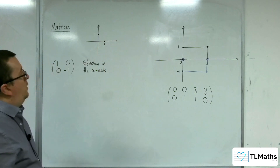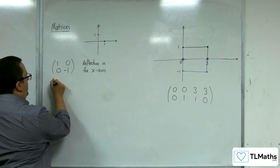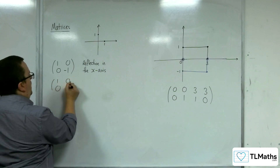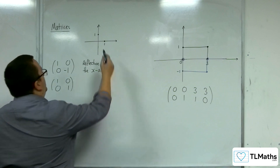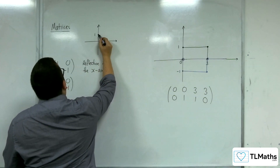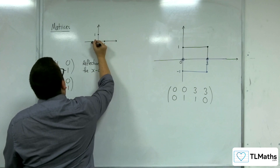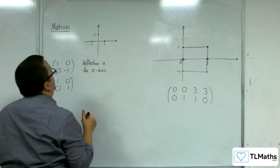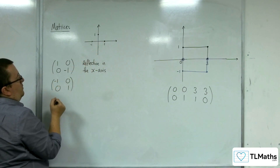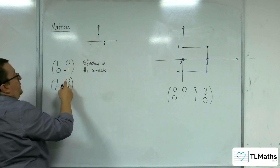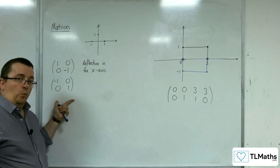So how about reflecting in the y-axis? Starting off with the identity (1, 0; 0, 1) — looking at our diagram, the point (0, 1) would remain exactly where it is if reflected in the y-axis, but the point (1, 0) would move over to (-1, 0). And (0, 1) has stayed the same, so the matrix is (-1, 0; 0, 1) for a reflection in the y-axis.